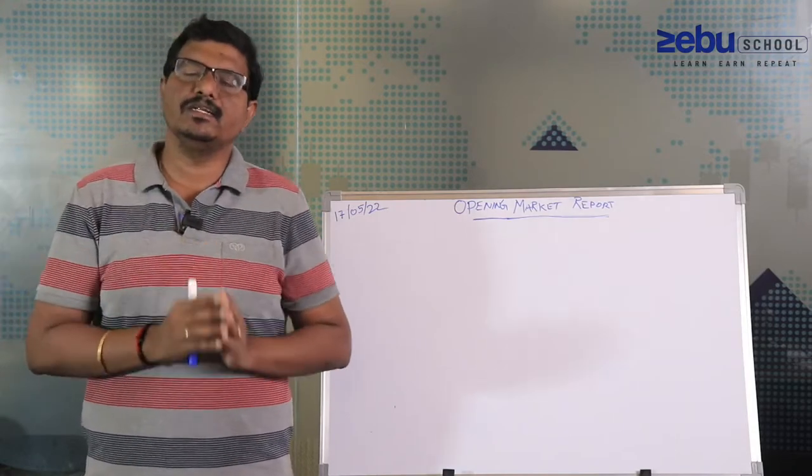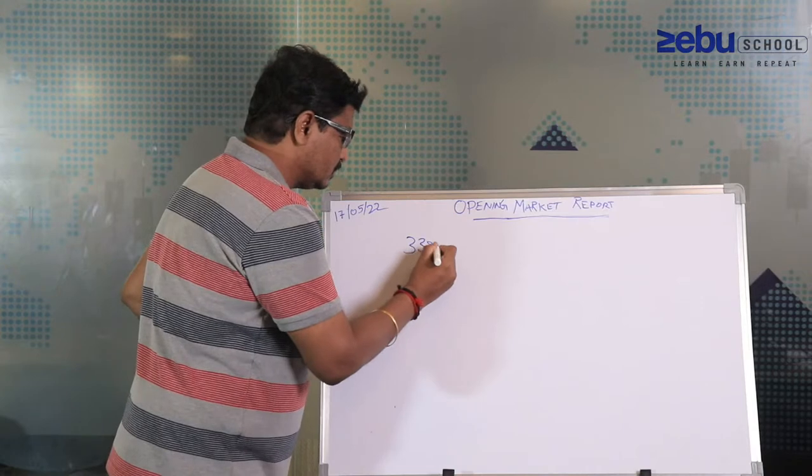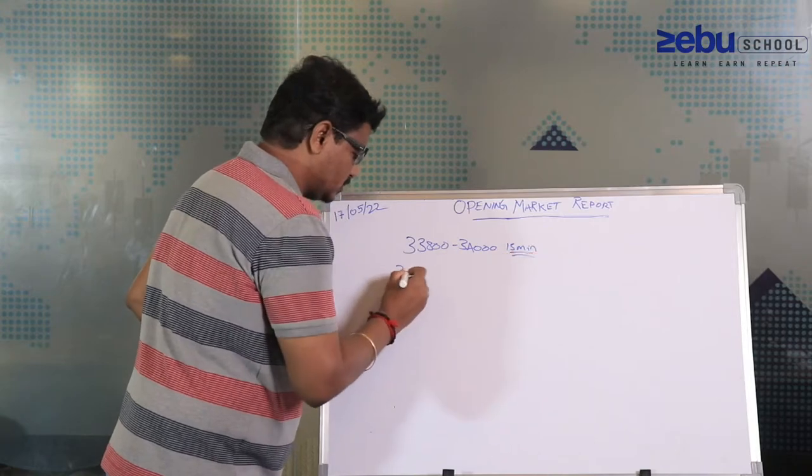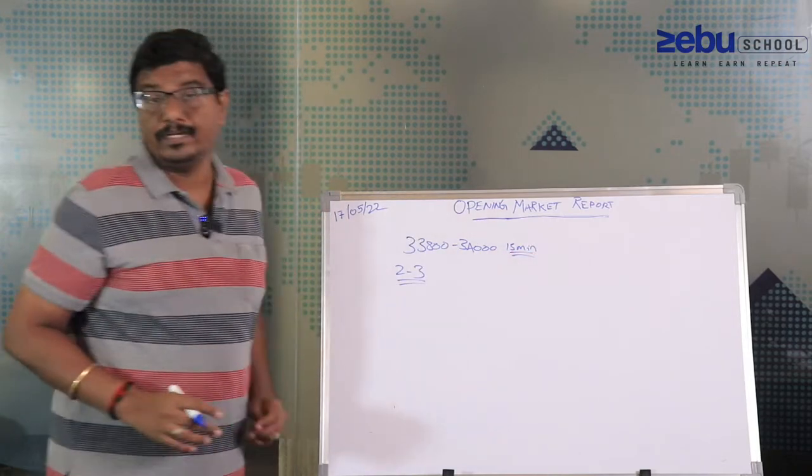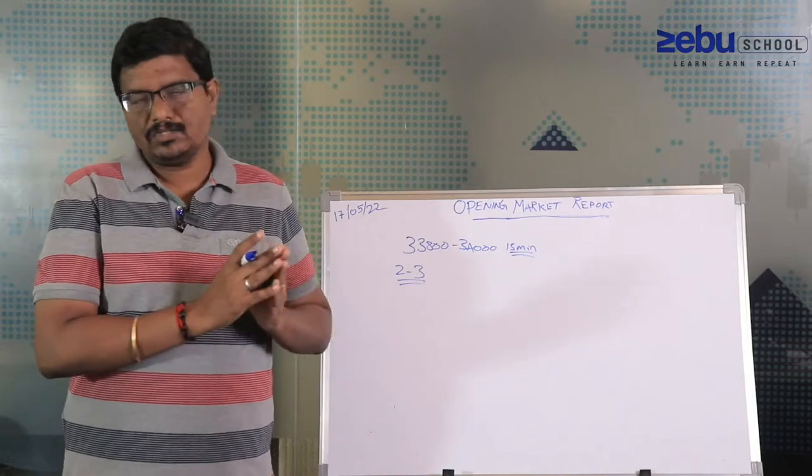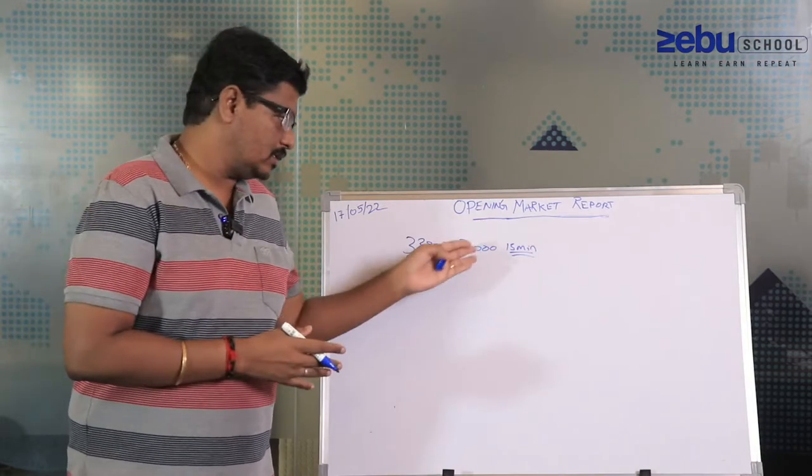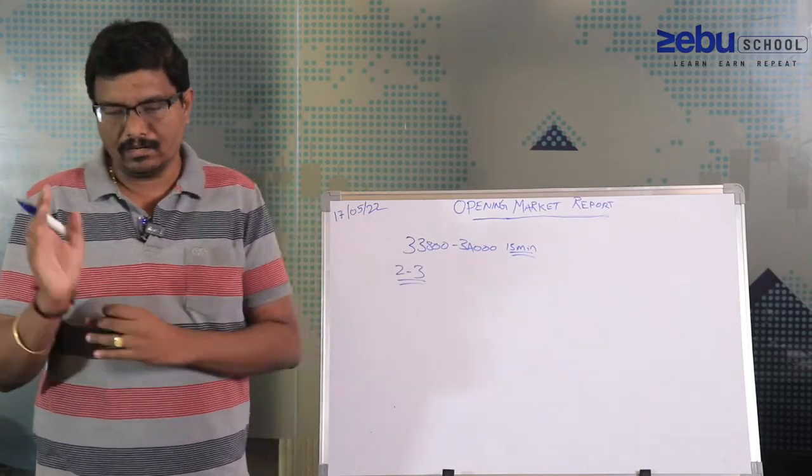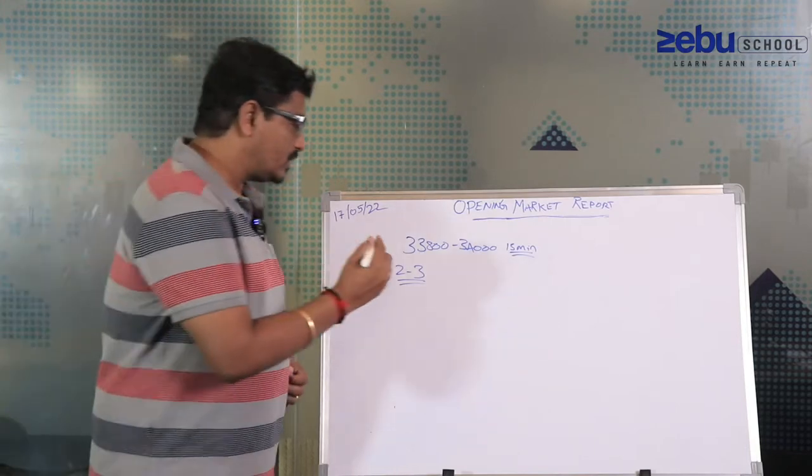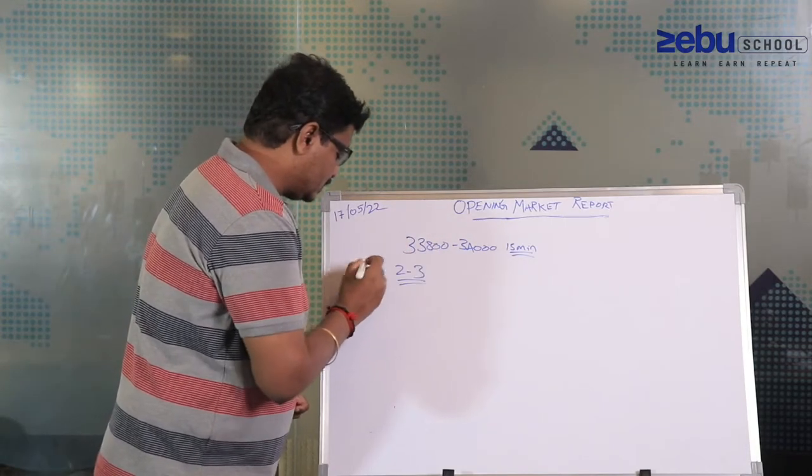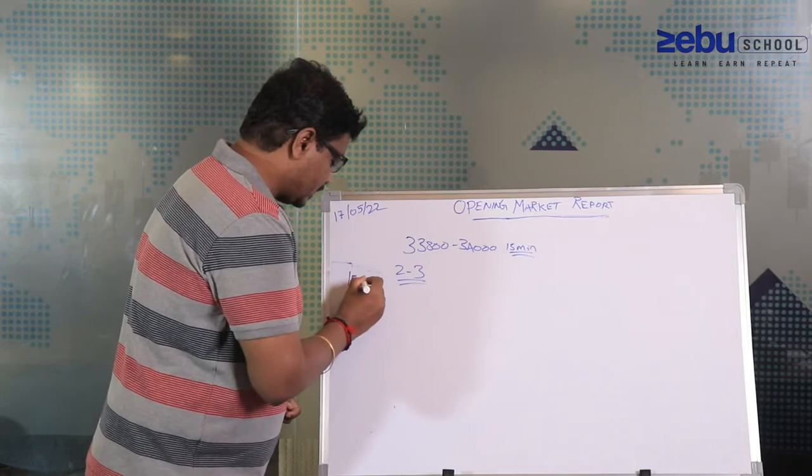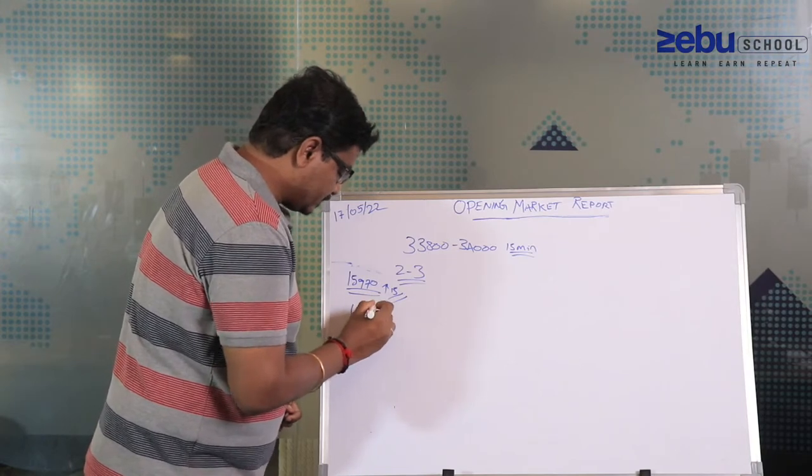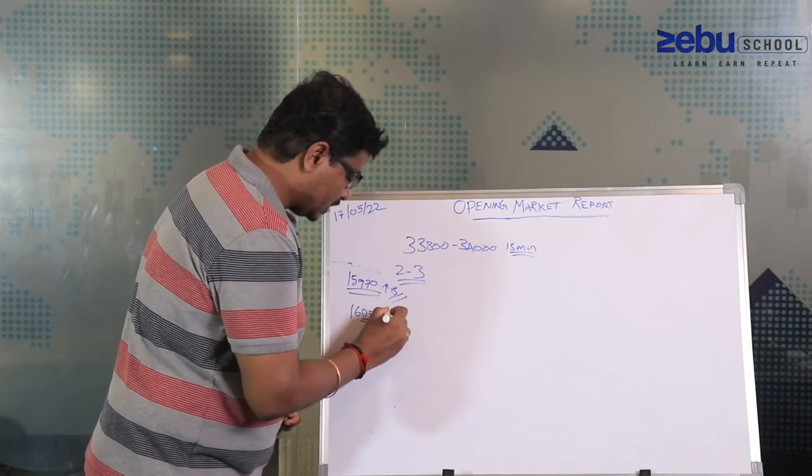Once the market sustains above this 33,800 to 34,000 band on a 15-minute basis, the next two to three days I will be bullish again. You know that from last Friday onwards I was slightly bullish on the market, and this is the short-term trend reversal point. If this holds on the 15-minute chart, it will go higher. For Nifty, the level is 15,970 - if it sustains above this on the 15-minute chart, it can go to 16,070 to 16,100 zone.